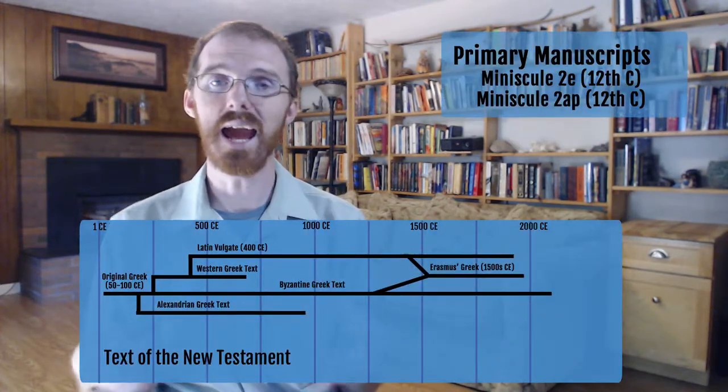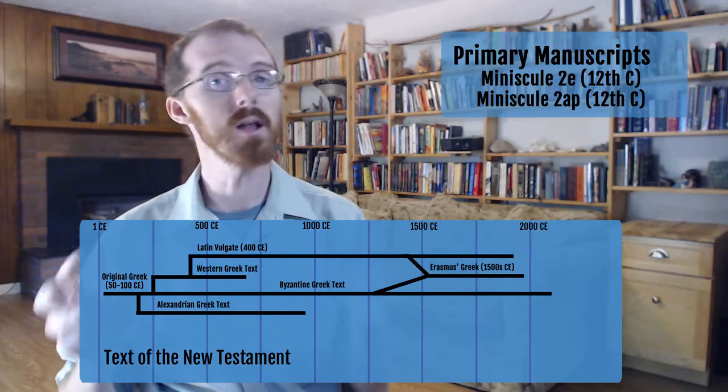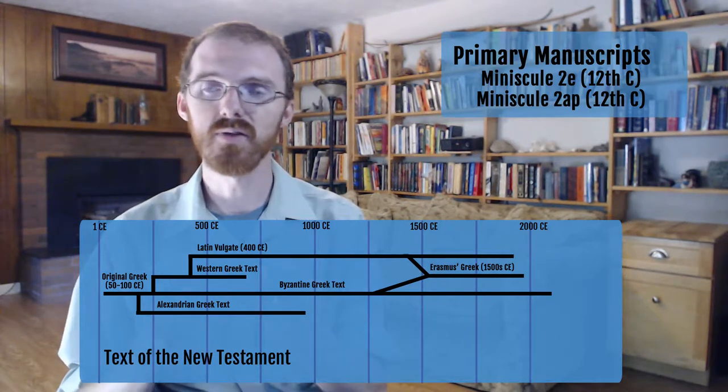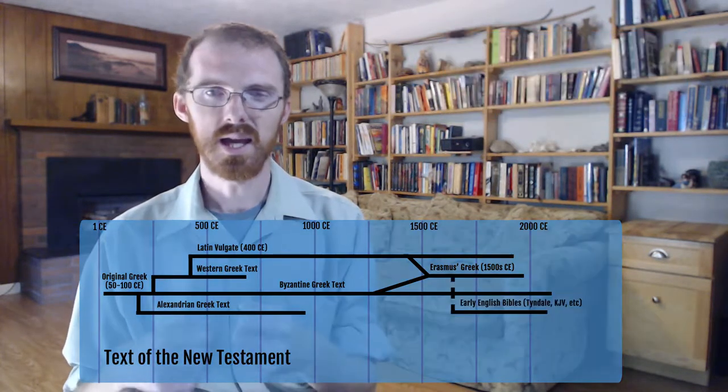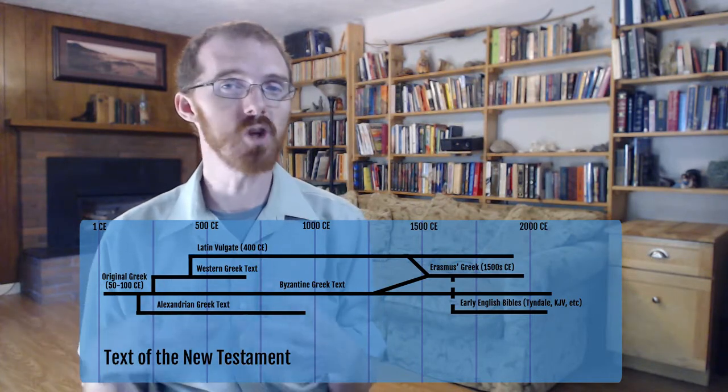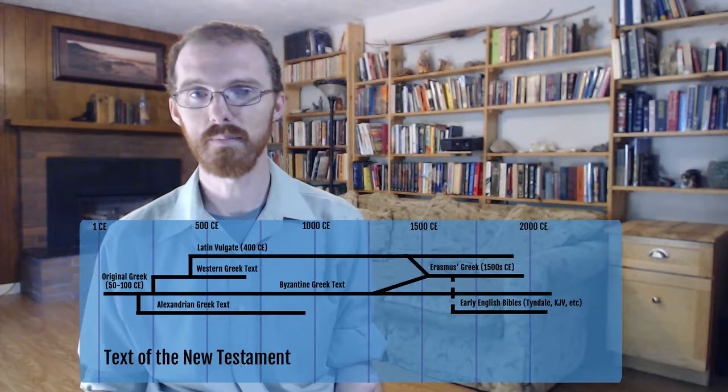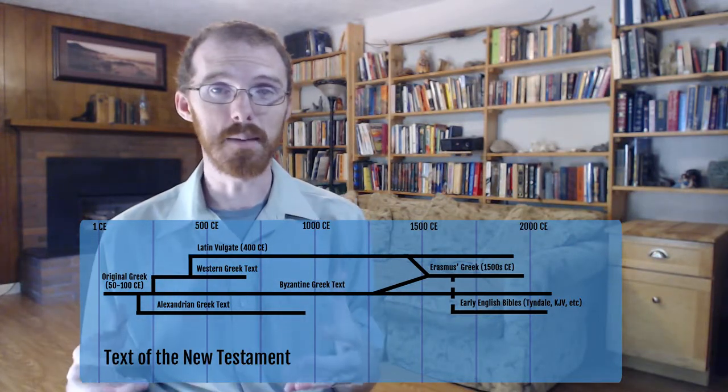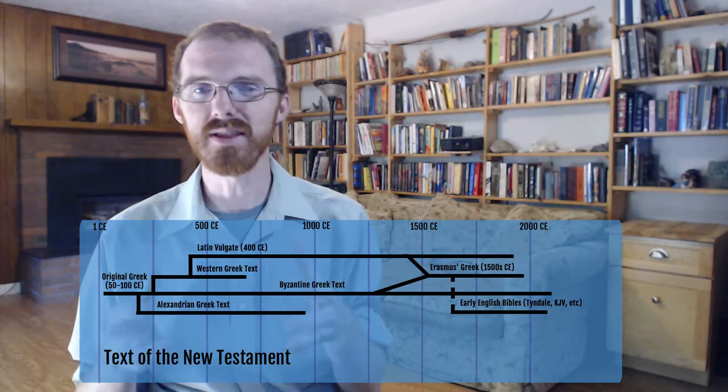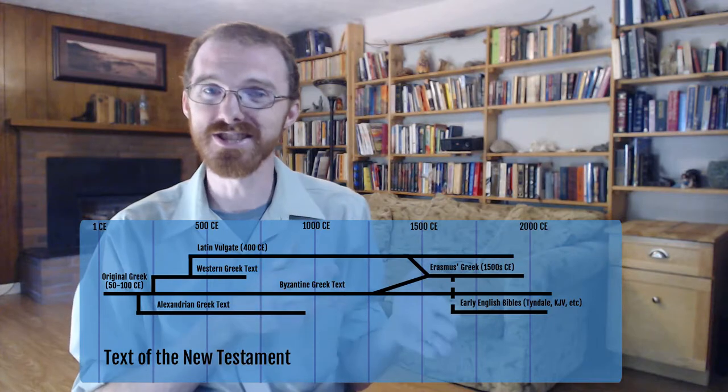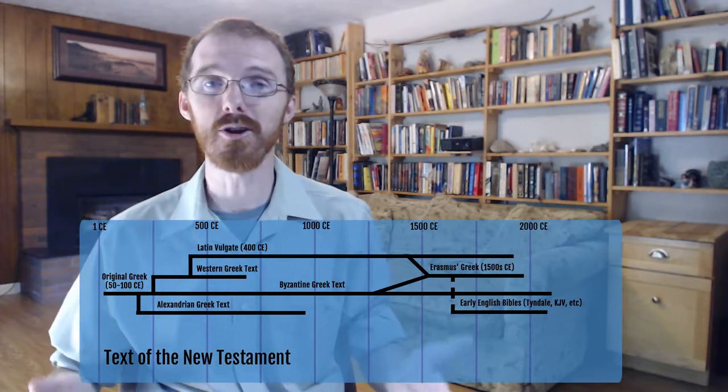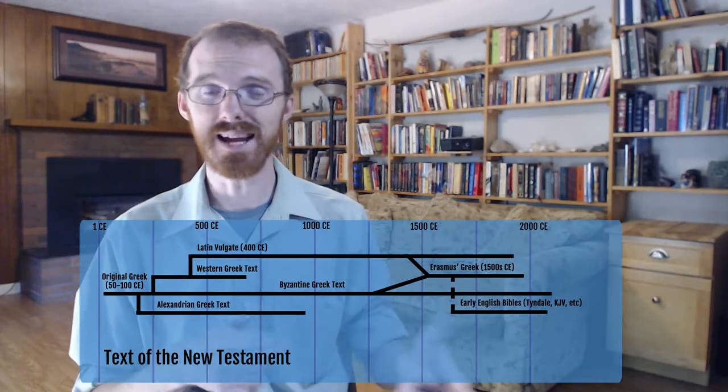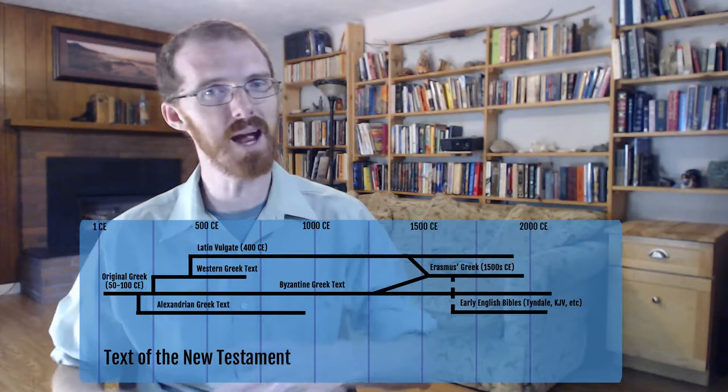A man named Erasmus gathered up six of these Greek manuscripts, all of them partials, and combined them together to publish the first critical text of the Greek Testament in the West. It is this work that became the basis for pretty much all of the early English translations of the Bible. And when these English translations started coming out, this was the first time that the people had ever encountered a translation that didn't fit what they thought Scripture should say, because up until that point, they had only heard the Bible in Latin. And there were a great many differences between the Latin Vulgate and the Byzantine Greek text that Erasmus used.